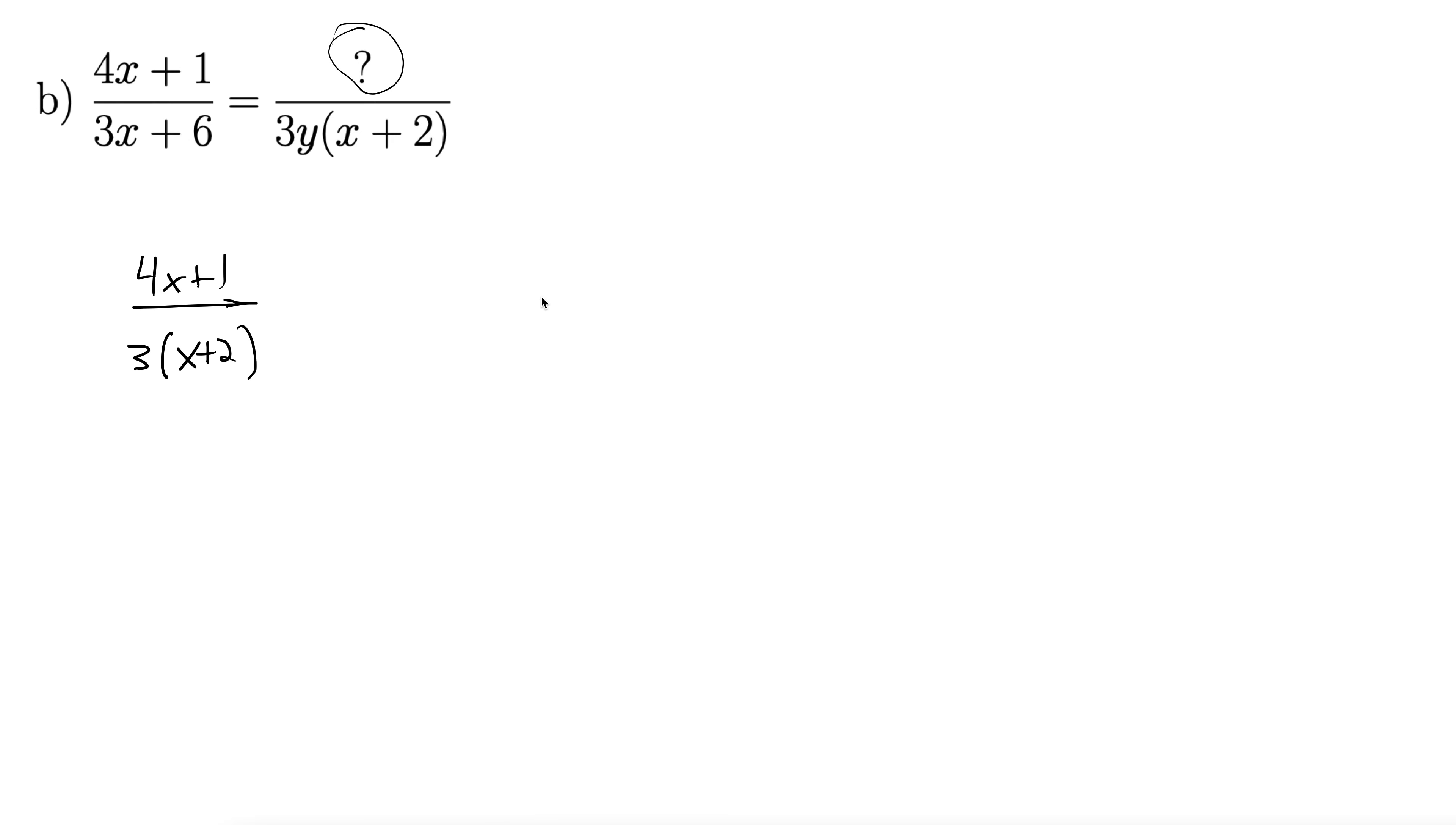Now the question is what do we have to multiply that by to get our desired denominator over here, 3y times x plus 2. Well, we have the 3. We have the x plus 2. The only thing we're missing is this y. So, let's add that in, y.